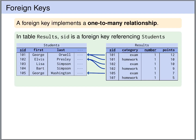Such a foreign key implements a one-to-many relationship. Here we have the tables students and results. In the results table, we have an attribute SID that is a foreign key referring to the students table. For instance, the SID 101 refers to student 101 in the students table — George Orwell. The SID 102 in the results table refers to student 102, Elvis Presley, and so on.